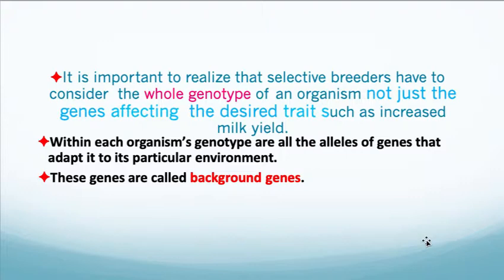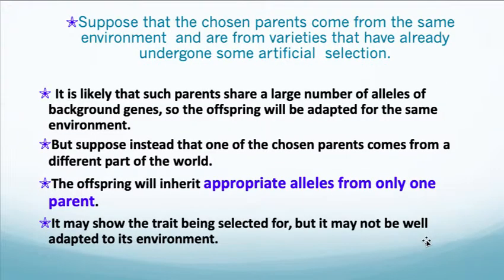It's important to realize that selective breeders have to consider the whole genotype of an organism, not just the genes affecting the desired traits such as increased milk yield. Within each organism's genotype are all the alleles of genes that adapt it to its particular environment — these are called background genes. If the chosen parents come from the same environment, it is likely they share a large number of alleles of background genes, so offspring will be adapted to that environment. But if one of the chosen parents comes from a different part of the world, the offspring will inherit appropriate alleles from only one parent — it may show the trait being selected for, but it may not be well adapted to its environment.